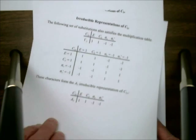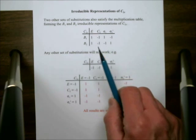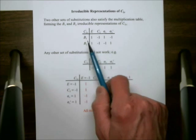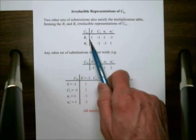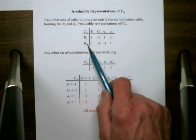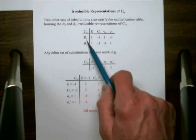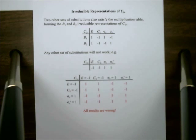We could continue in that manner. We could come up with two more and only two more. The next one is called B1, it's 1 minus 1, 1 minus 1. And the last one is B2, 1 minus 1 minus 1, 1. Again, these are the Mulliken labels.